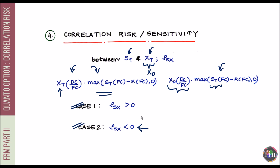In general, as a rule of thumb, the Quanto option gains in value when the correlation between S and X goes down. In this short video we've taken a look at what a Quanto option is and what kind of correlation risk or sensitivity it has — specifically the correlation between the underlying asset and the foreign exchange rate X.